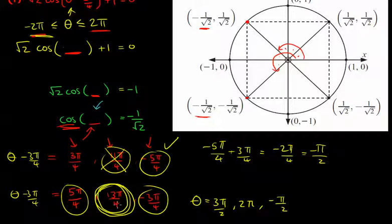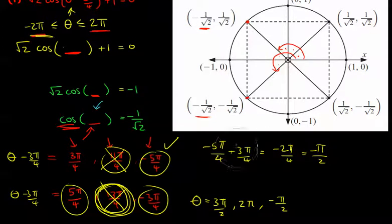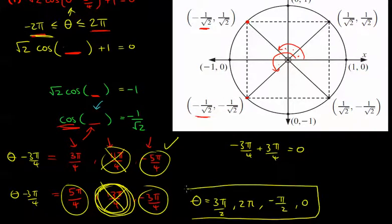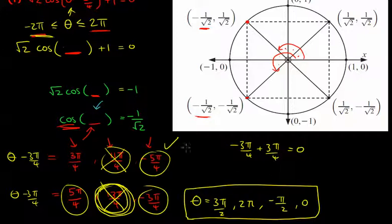13π over 4 is already bigger than 2π, so adding 3π over 4 makes it even bigger — that one's out. And minus 3π over 4 plus 3π over 4 gives 0. So 0 is another answer. So theta could be any one of these: 3π/2, 2π, minus π/2, and 0. There might be some other answers if I haven't added or subtracted enough multiples of 2π, but potentially these are it.